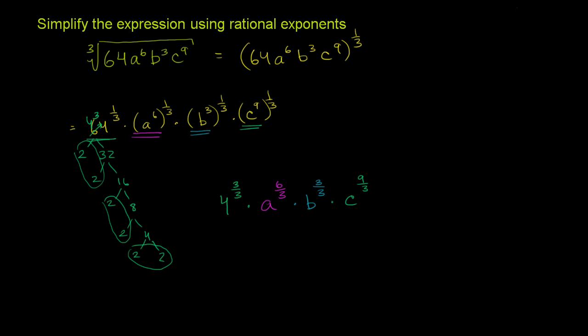And if you simplify it, this first term here, 4 to the 3 thirds, that's just 4 to the first power, so that's just 4. We have a to the 6 thirds. 6 thirds is just 2, so that just becomes a squared. b to the 3 thirds power, that's just b to the first, or b. And then finally, c to the 9 thirds. That's just c to the third power. So we write c to the third here. And we are done.